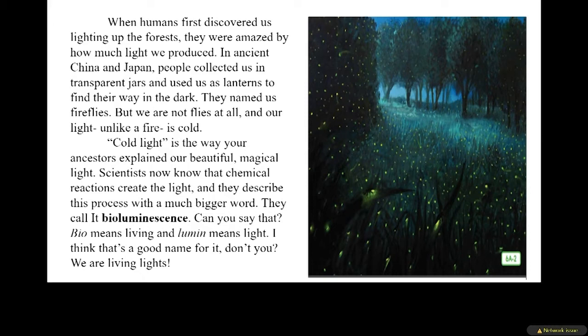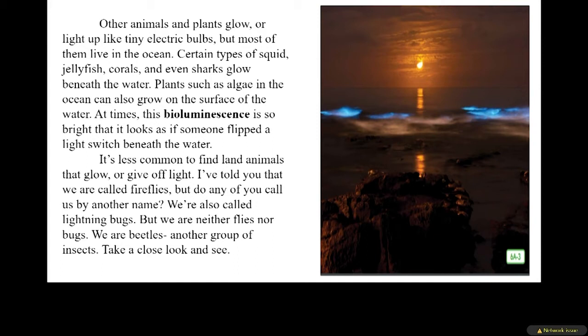Bio means living, and lumen means light — I think that's a good name for it. We are living lights. Other animals and plants glow, or light up like tiny electric bulbs, but most of them live in the ocean. Certain types of squids, jellyfish, corals, and even sharks glow beneath the water. Plants, such as algae in the ocean, can also glow on the surface of the water. At times, this bioluminescence is so bright that it looks as if someone flipped a light switch beneath the water. It's less common to find land animals that glow or give off light.